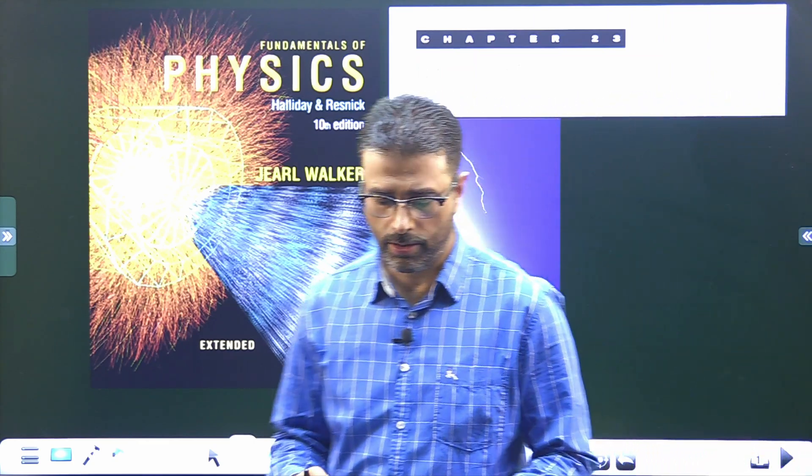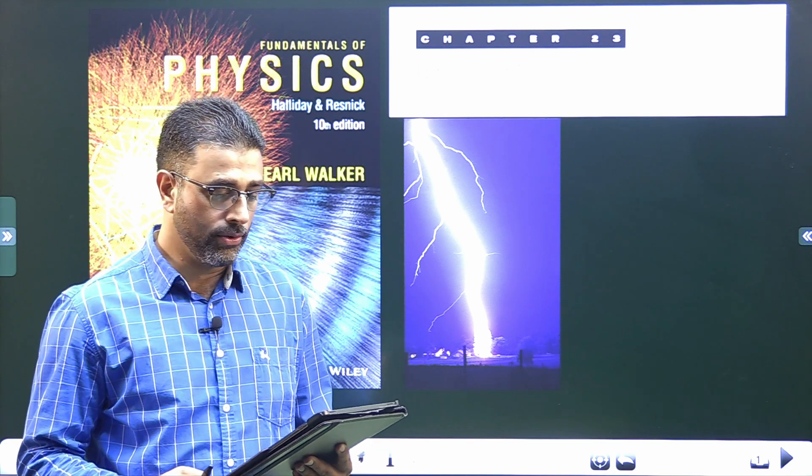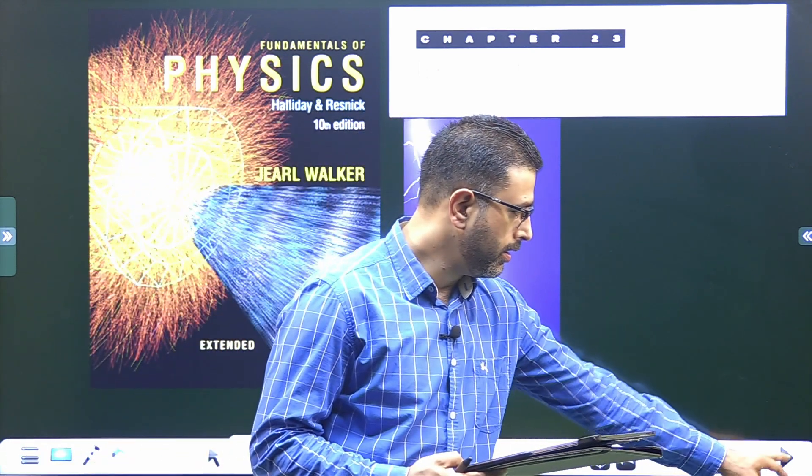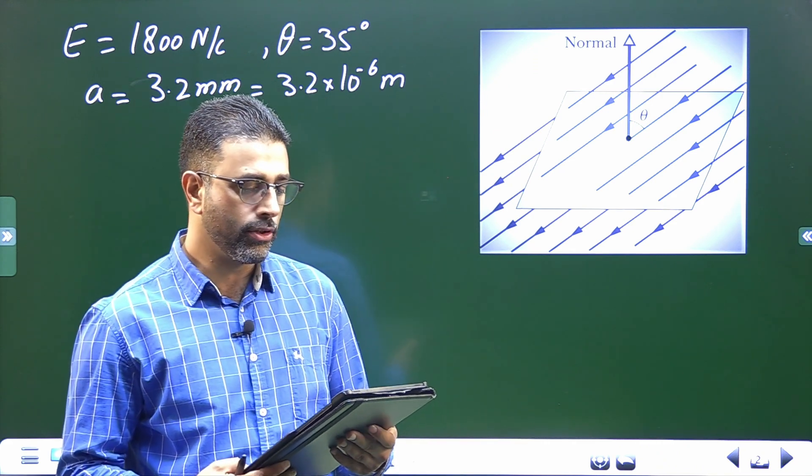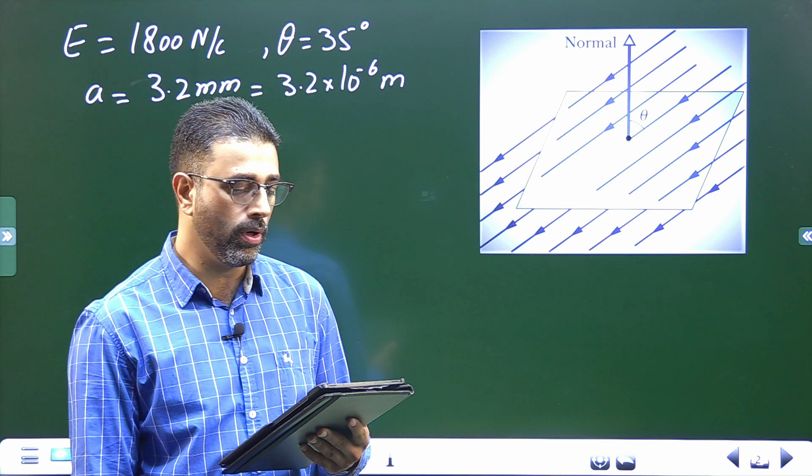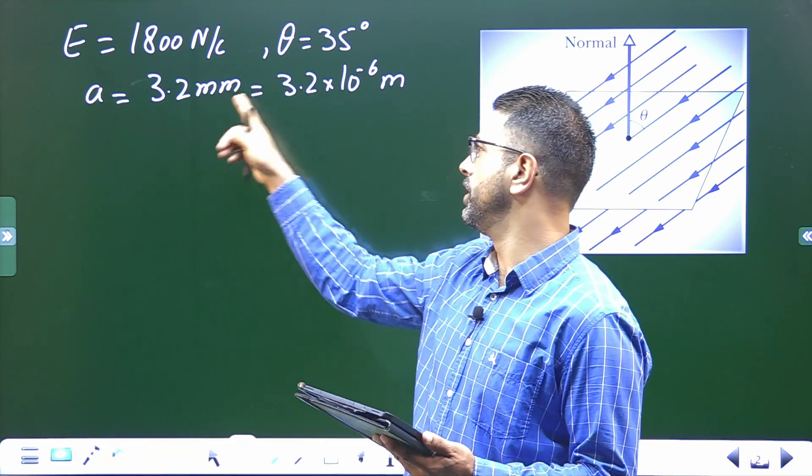Hey guys, assalamu alaikum warahmatullah. Chapter 23, Gauss law, problem number one. The question is: the square surface shown in figure measures 3.2 millimeters on each side, so side length is 3.2 millimeters.